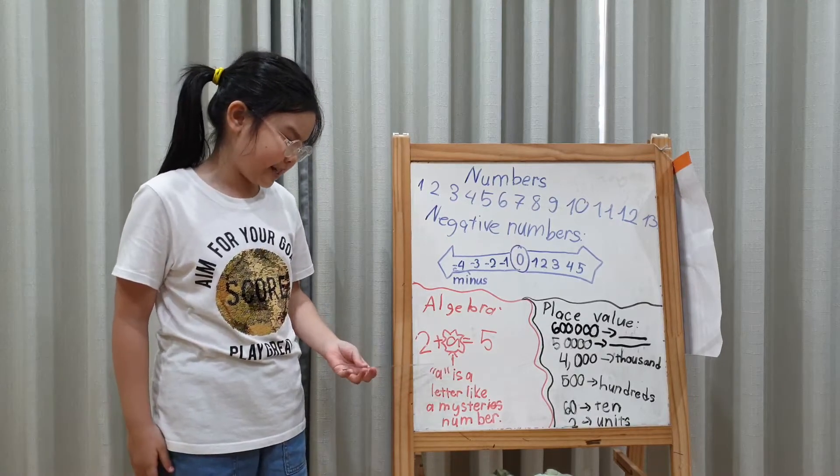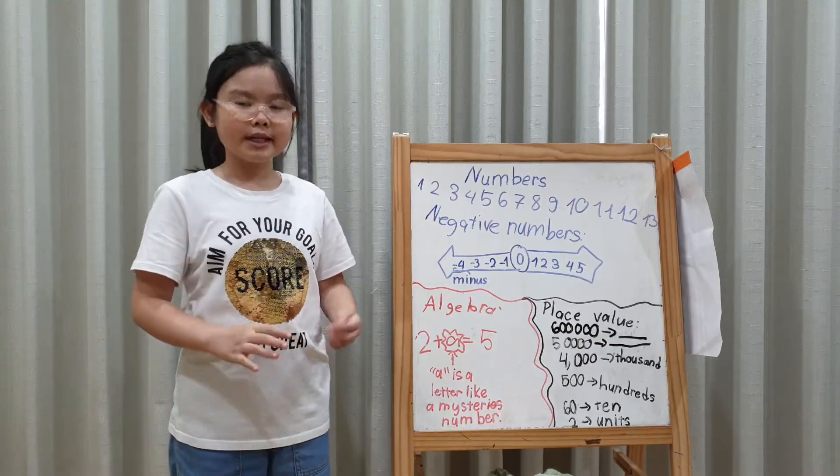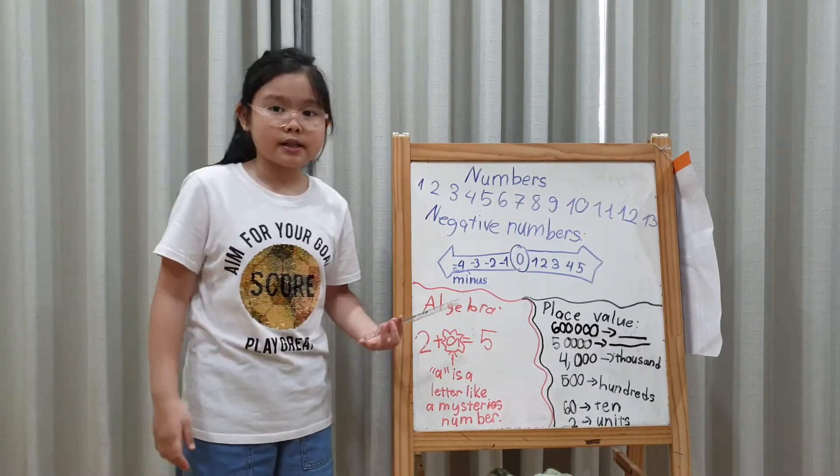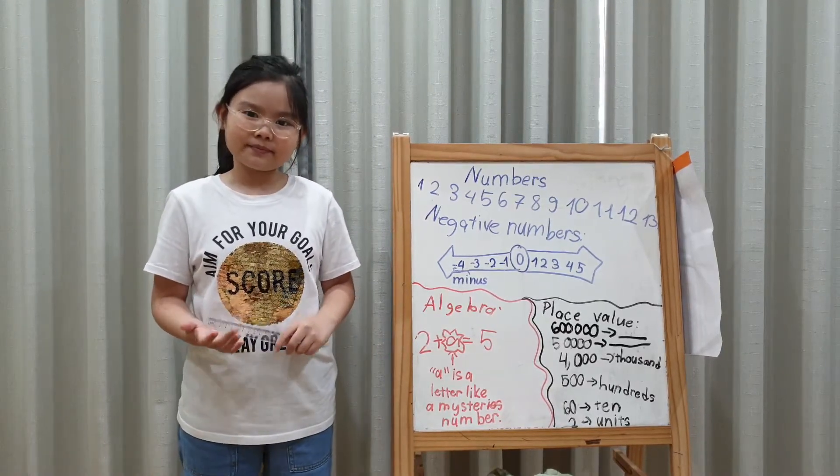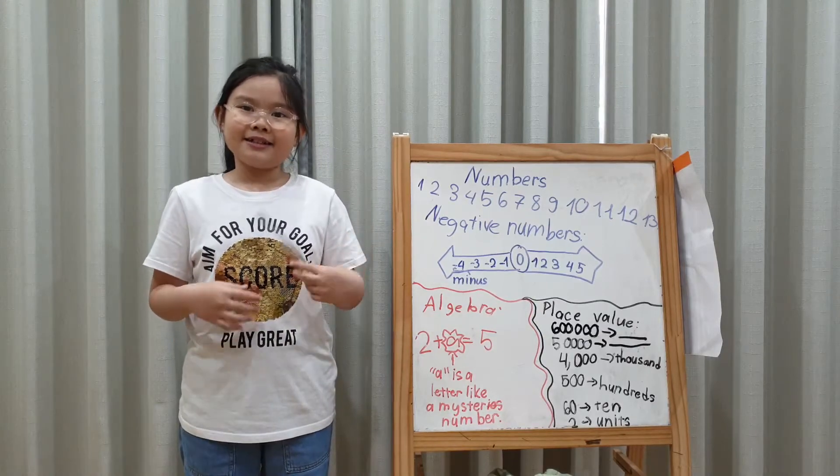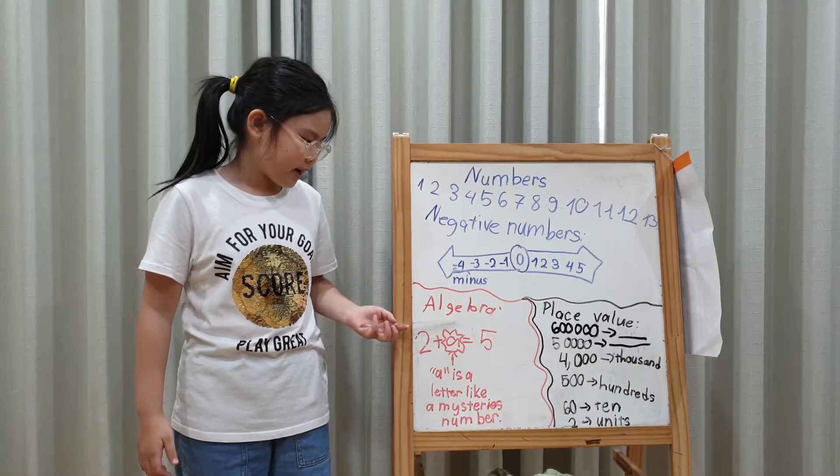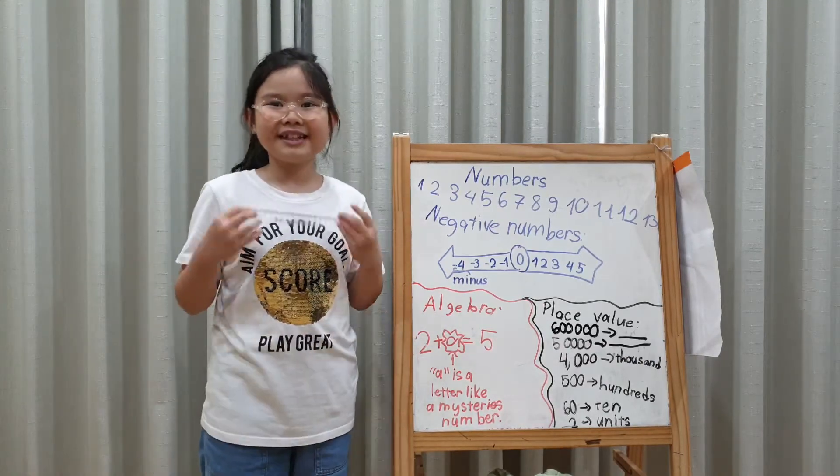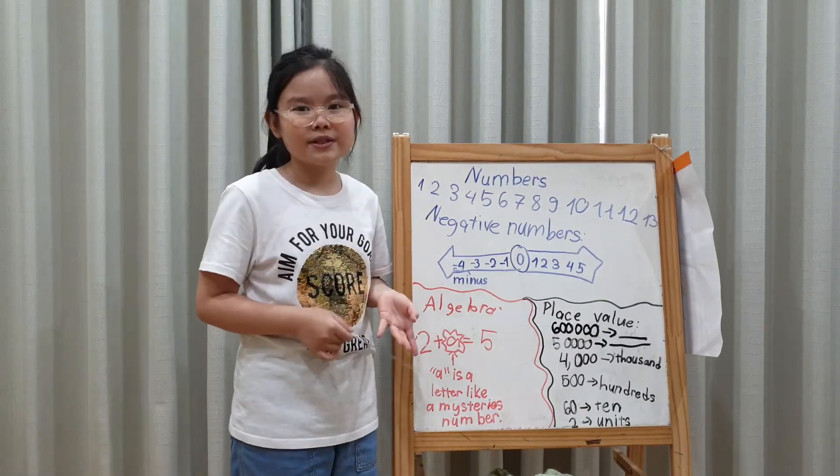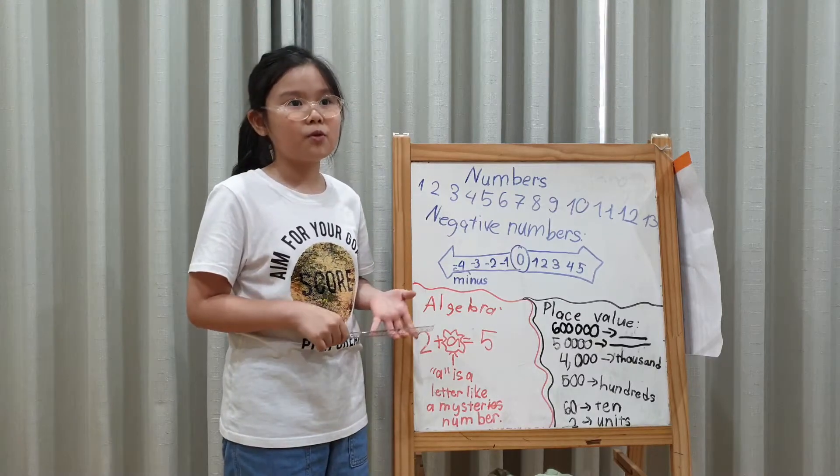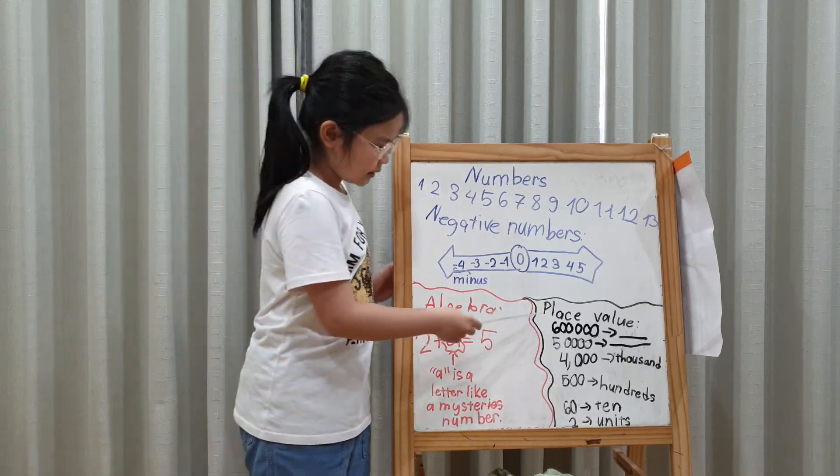I'll read you this sentence. A is a letter like a mystery number. So, we need to find what's number that A is hiding. Easy. Three. You know? All students have learned algebra. Even me. Later, I'll give you some more of them. It can be easy or it can be hard a bit.